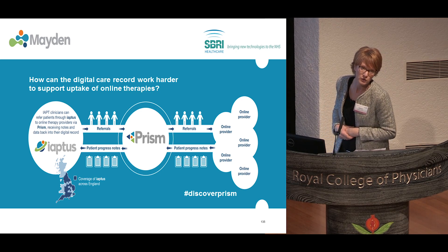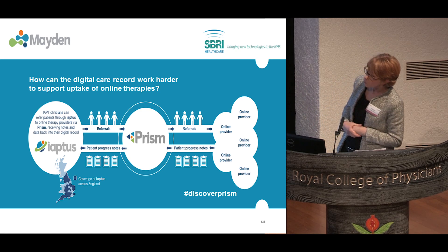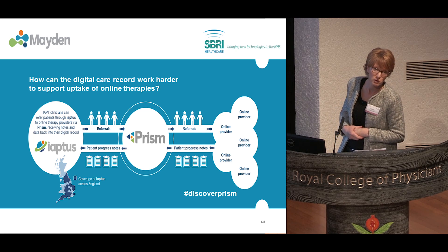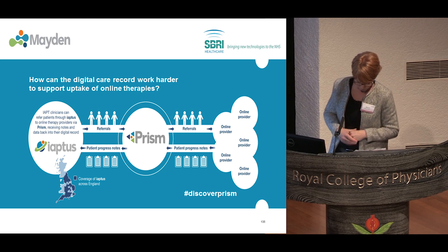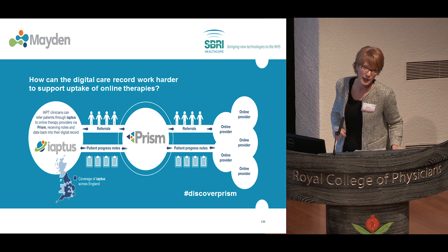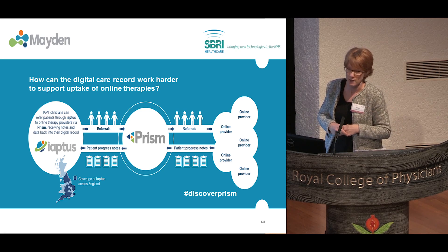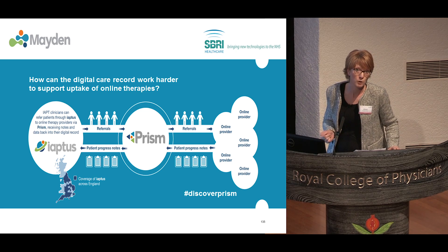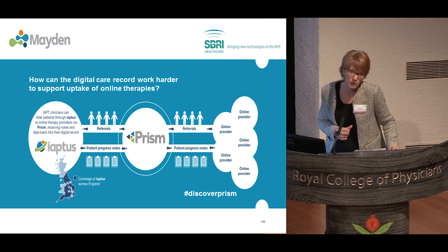PRISM enables an IAPT service to seamlessly and securely send a referral to an online provider of their choice, and then — critically — allows patient progress and outcome data to be sent back straight into the patient's digital care record. We're currently piloting with Berkshire IAPT and SilverCloud. We're also working with three other online providers: iiso, Buddy App, and Mind District.